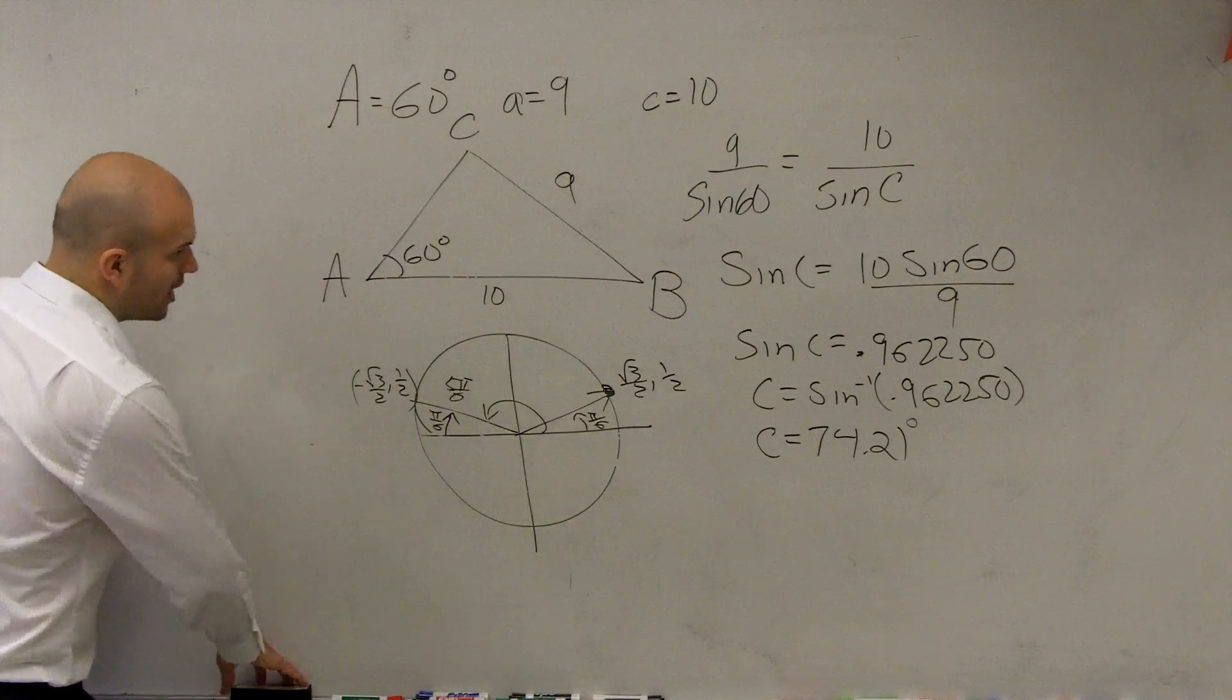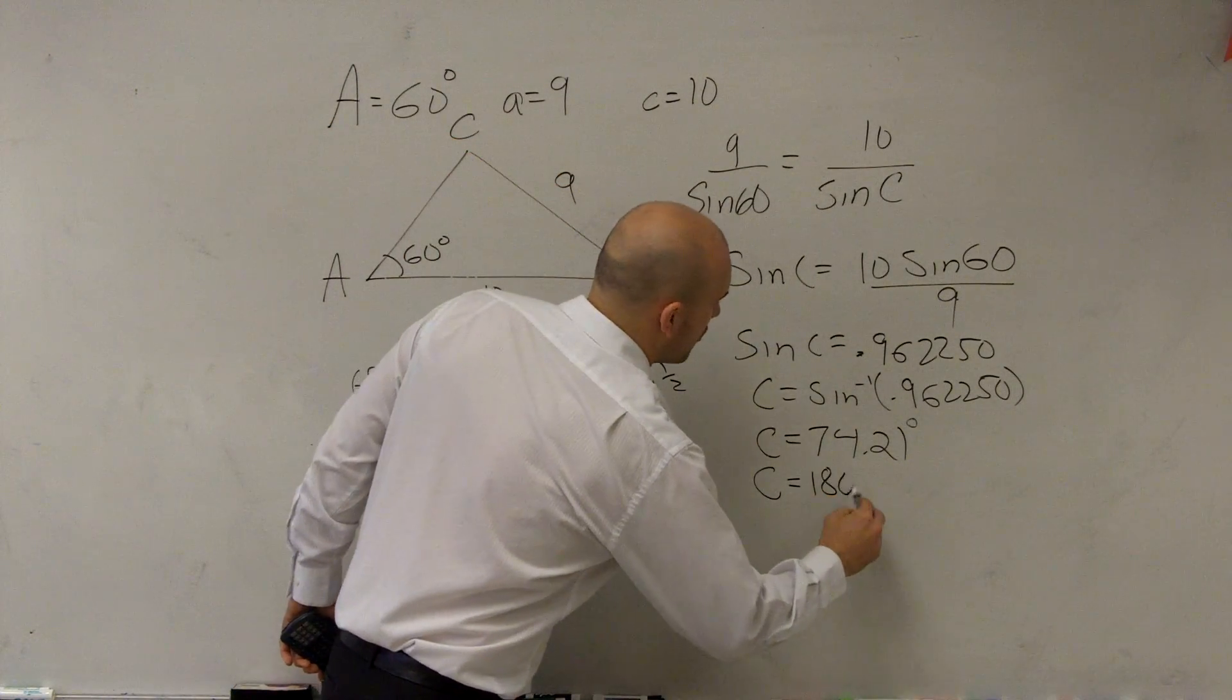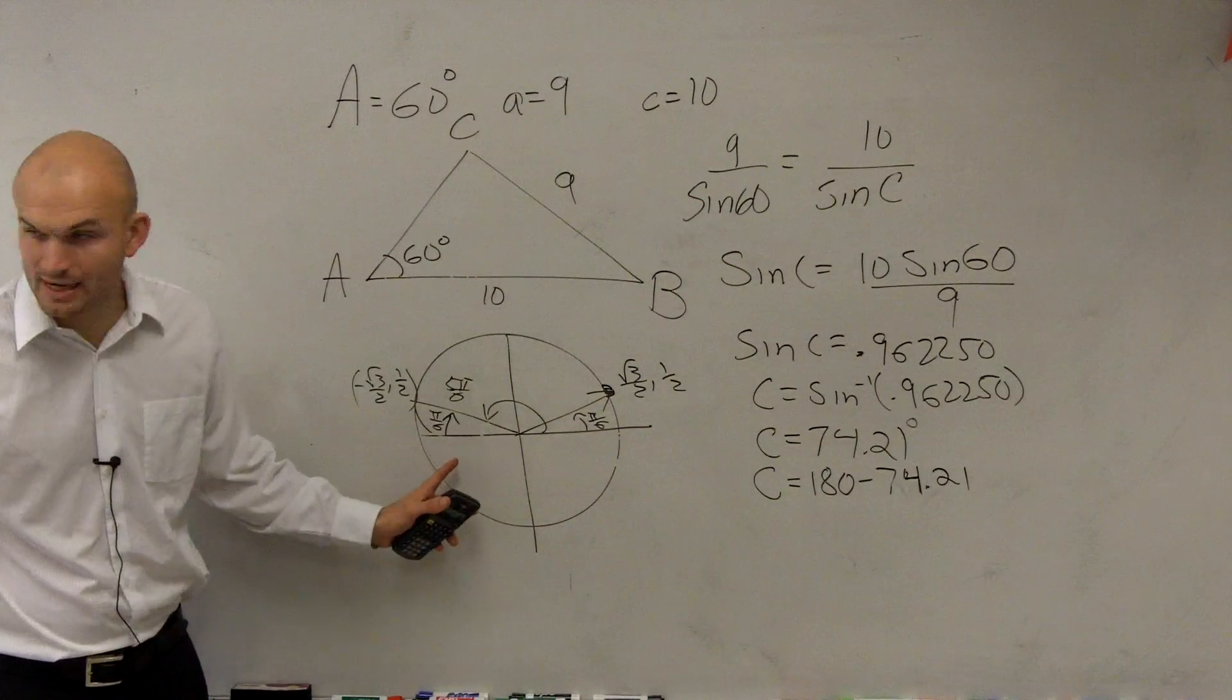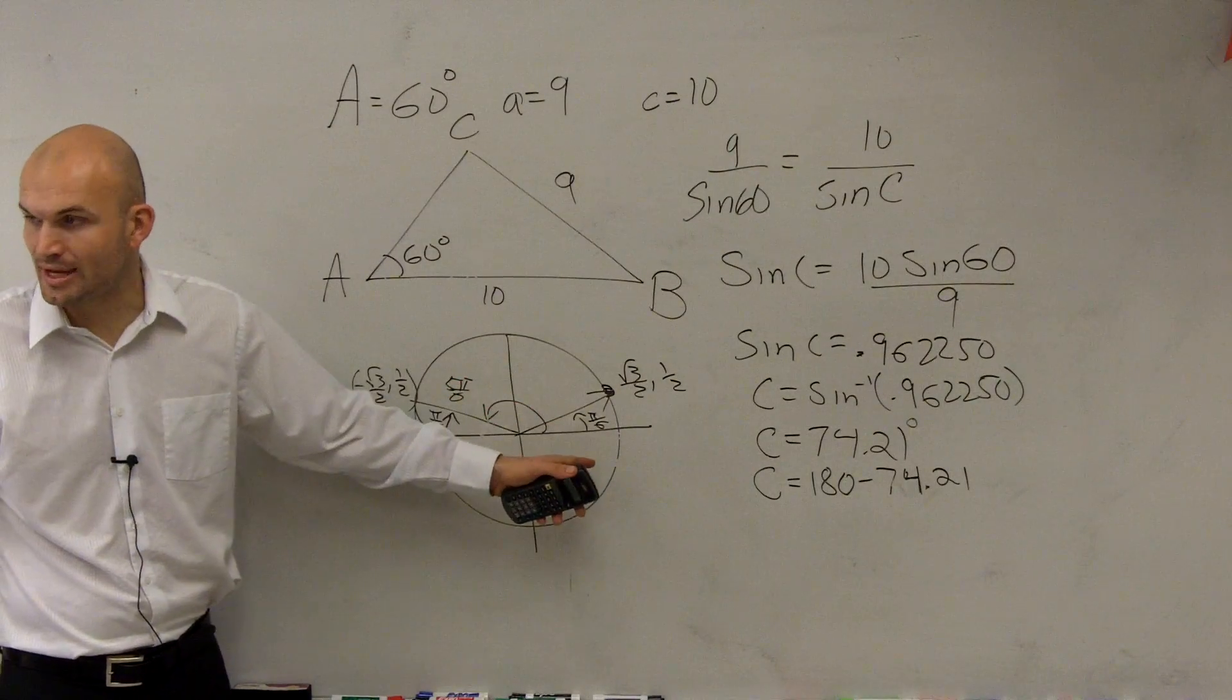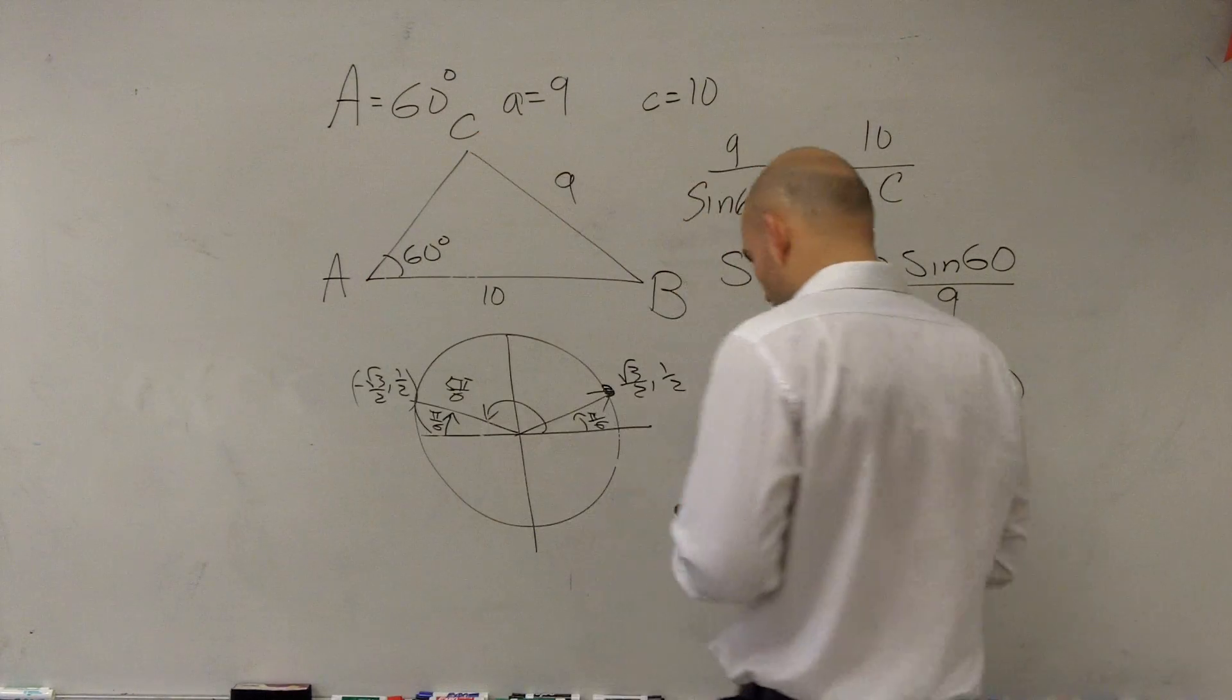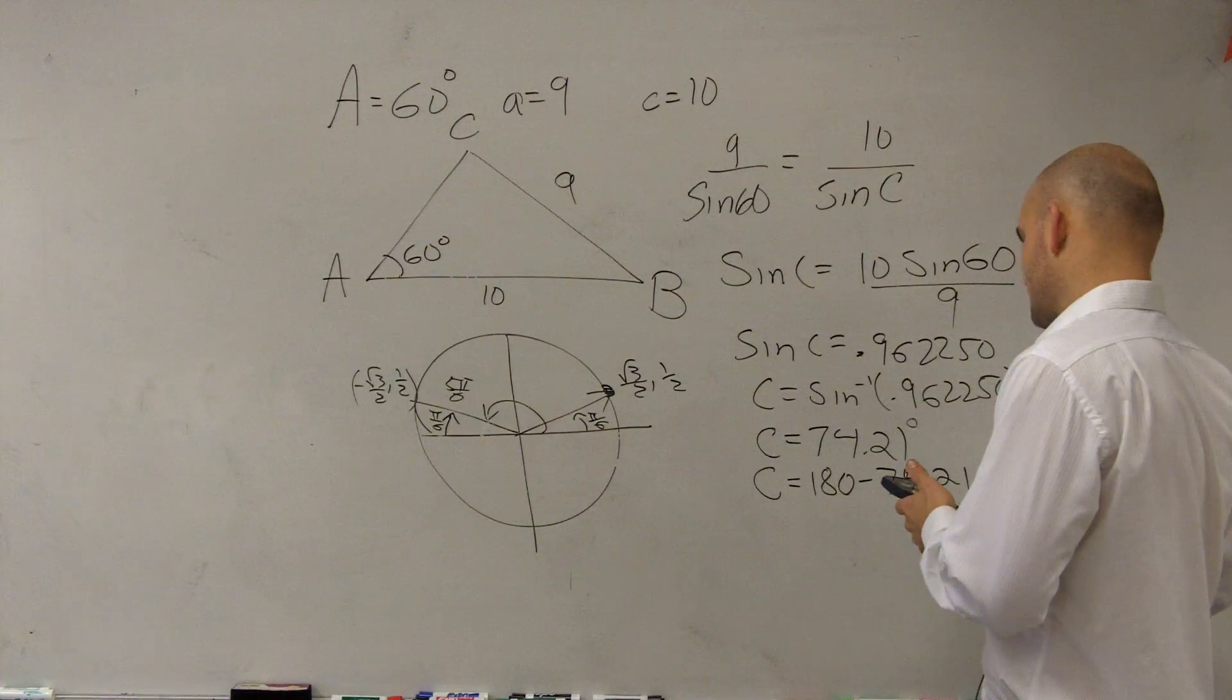So, when you're finding the inverse of a value, you could possibly, for sine, you have two positive answers. So, there might be two positive solutions. So, let's go and take a look then of what would be, if this is 74 degrees, what could be a possible other solution? So, to find that, I could say c equals 180 minus 74.21. Again, what I'm doing is I'm taking 180, subtracting my angle, to be able to find the other possible angle. So, I take 180, and that's going to equal 105.79.